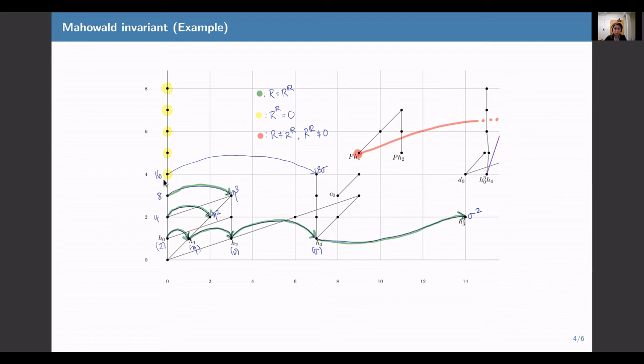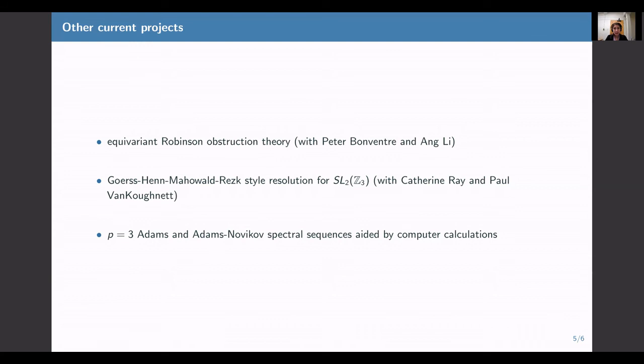So for example, the entire zero column starting in the element 16. And finally, it's possible for both Mahowald invariants to be non-zero, but disagree. So an example of that is the element pH1 I have here marked in red. The two Mahowald invariants of pH1 are non-zero and different.